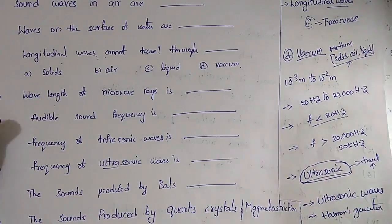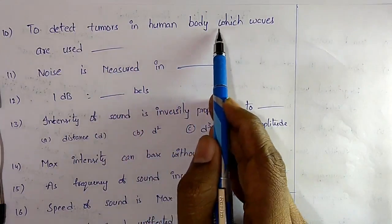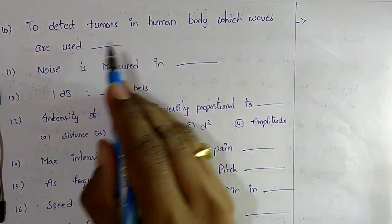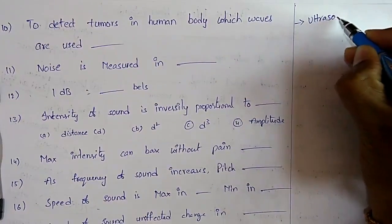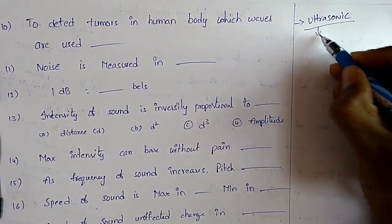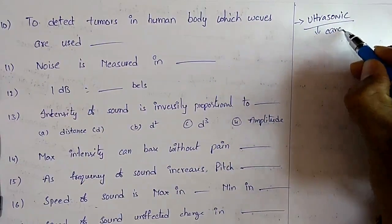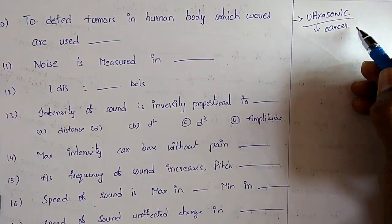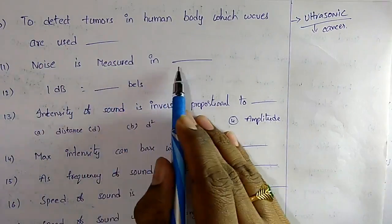Question 10: To detect tumors in the human body, ultrasonic waves are used. Ultrasonic waves are also used for cancer treatment, and to observe the valves of the heart.